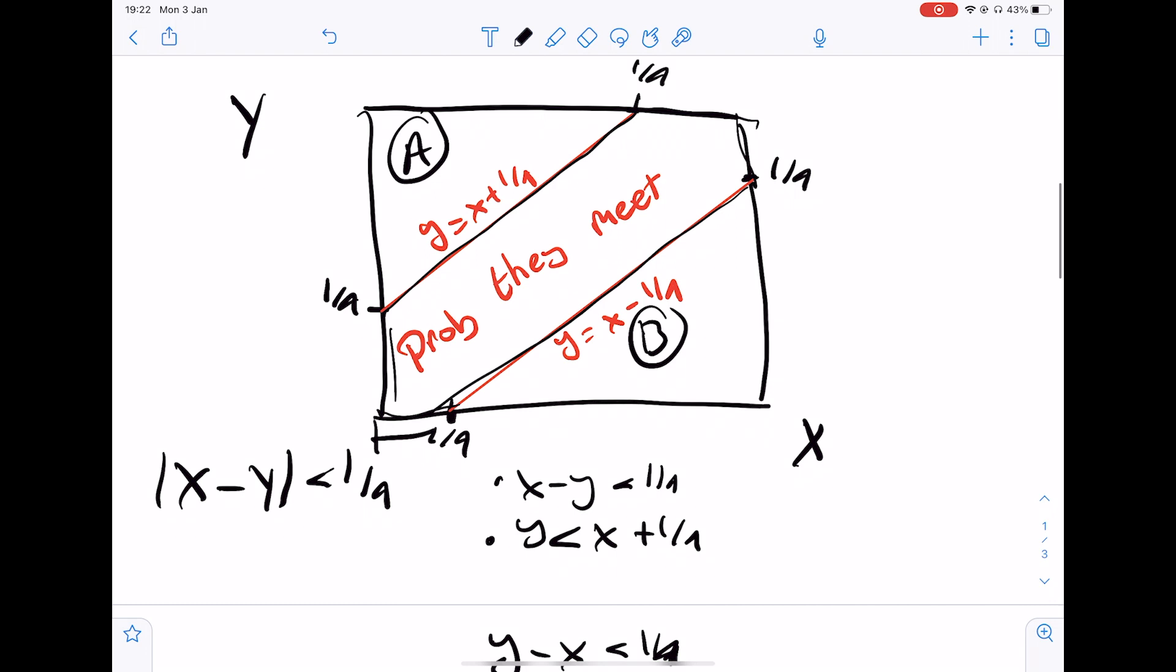Now we know that this is going to be a quarter. This is evidently going to be three quarters. Three quarters here, three quarters here, three quarters here, and three quarters here.